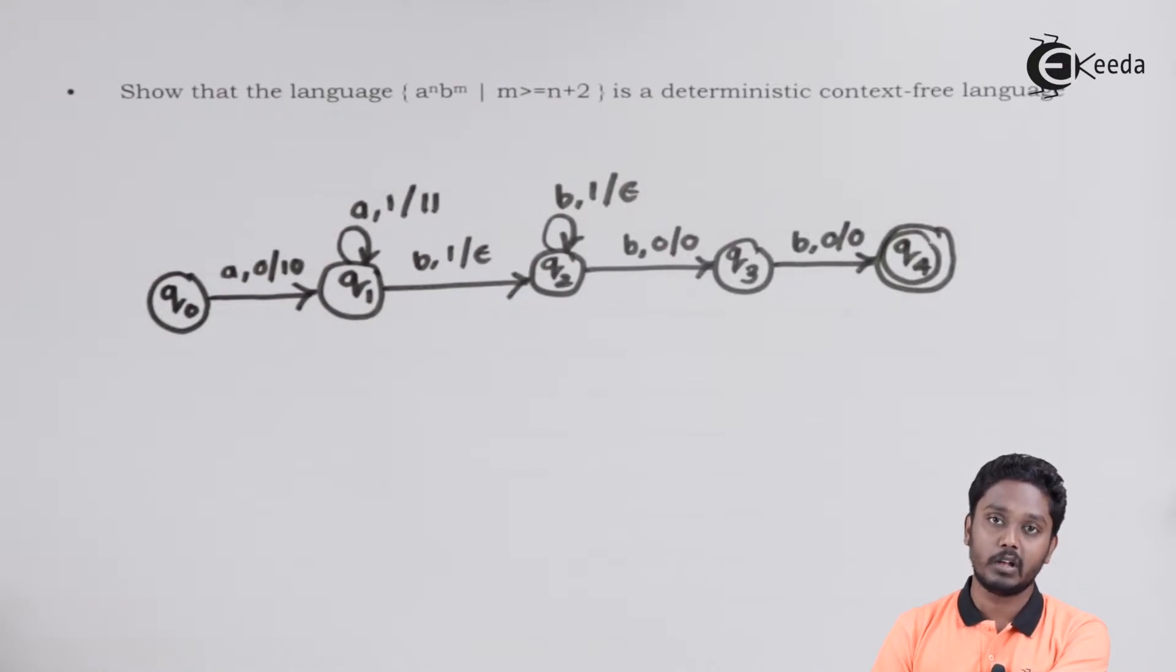Now, even if we encountered more number of B's, the number of B's are more than number of A's by at least 2. So we can have a loop over there.